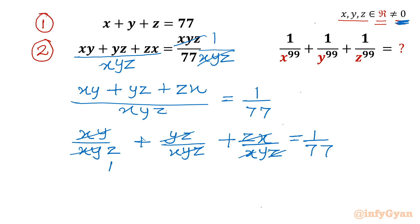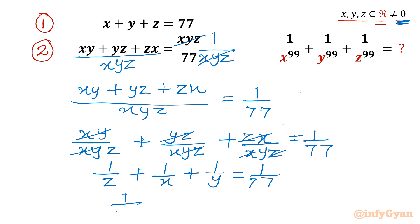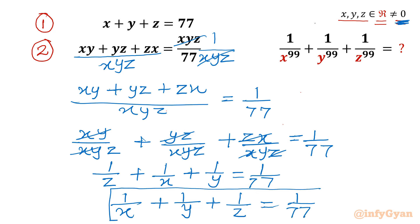After cancelling, it is left as 1 over z plus 1 over x plus 1 over y equal to 1 over 77. So we can write 1 over x plus 1 over y plus 1 over z equal to 1 over 77. I will call this equation number 2.